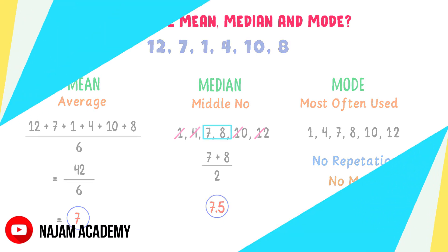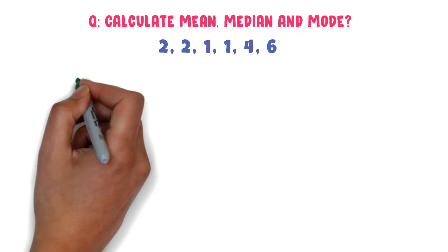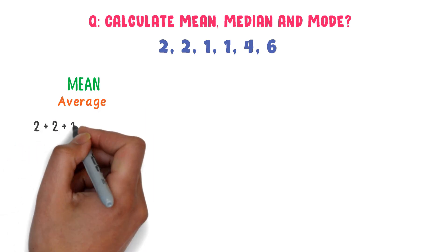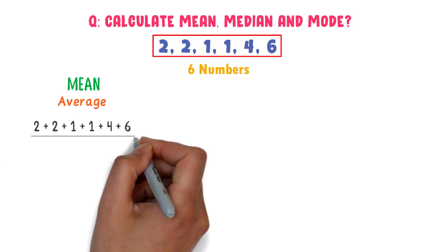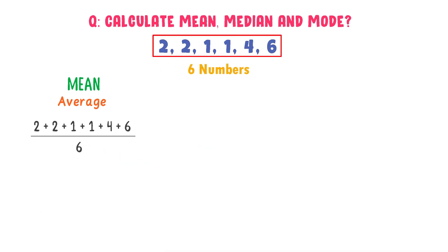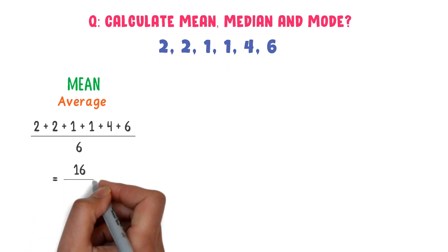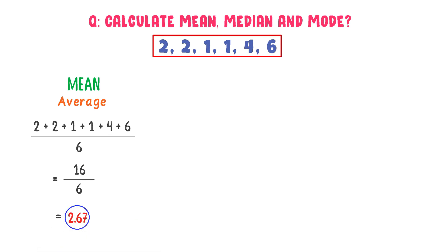Let me teach you one another example. Find the mean, median and mode of the following data set. We know that mean is the average number: 2 plus 2 plus 1 plus 1 plus 4 plus 6. There are 6 numbers present in this data set. After adding, I get 16, and I divide it by 6, which equals 2.67. So the mean or average of this data set is 2.67.